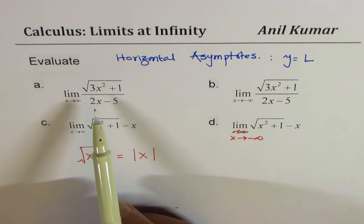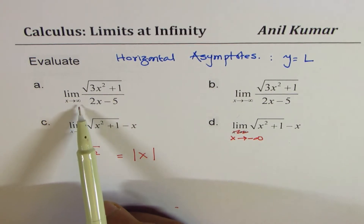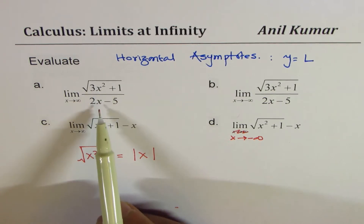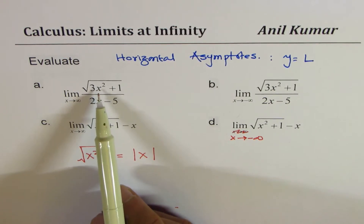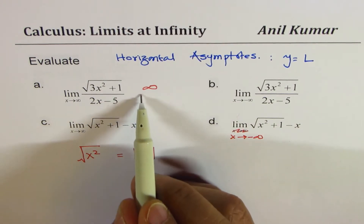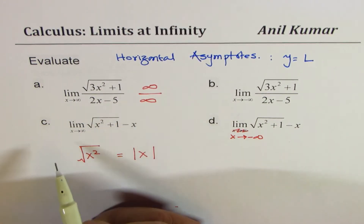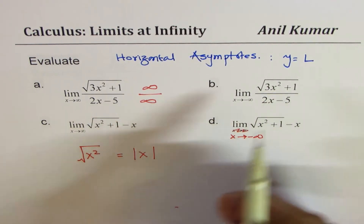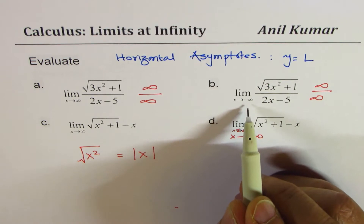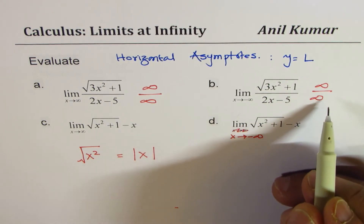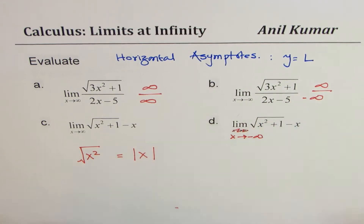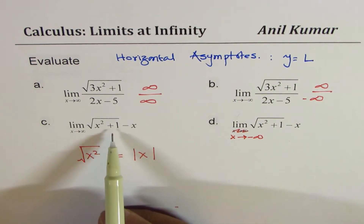Let's observe what happens if we place a very large number in for x. In the first case, the numerator will be infinitely large and the denominator will also be infinitely large. In the second case, we are putting a negative large number — this is always positive, so we expect the denominator to be negatively large.